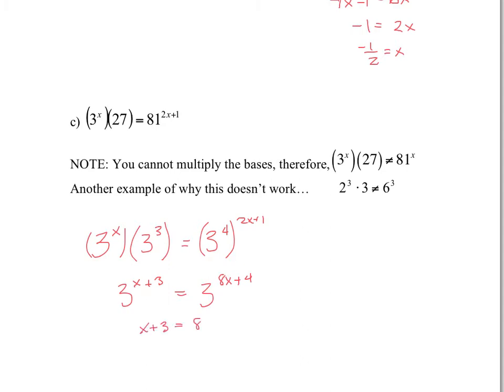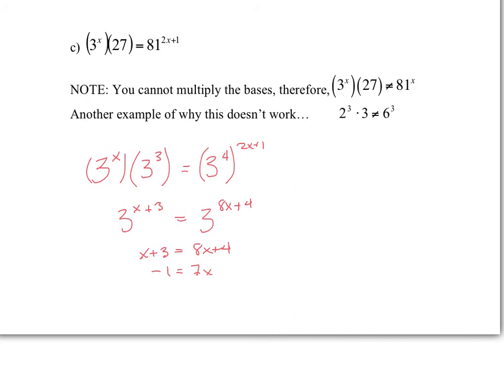So x plus 3 equals 8x plus 4. And we solve for x. So I'm going to bring the x over here, and I'm going to bring the 4 over there. So you get negative 1 equals 7x. I'm just going to move it down to give myself a little bit of space. And you get negative 1 7th equals x.